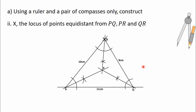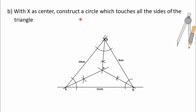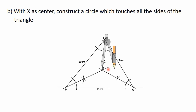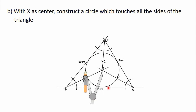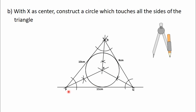Now let's move on to the last part of the question. It says that with X as center, construct a circle which touches all three sides of the triangle. To do this, move the needle of the compass to X, then adjust the pencil end to touch any of the three sides — PQ, PR, or QR. Adjust it to touch the side PQ, then turn the compass and construct a circle. This circle will touch all three sides of the triangle: side PQ, side PR, and side QR.